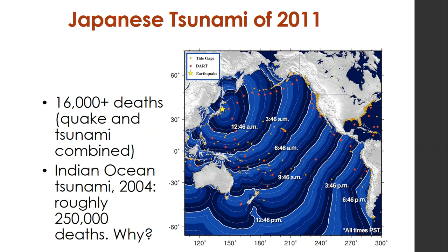The Indian Ocean tsunami in 2004 had roughly 250,000 deaths — many people living in low-lying areas with no warning system. When you have low-lying areas that extend far inland, that wave can travel quite far carrying lots of debris. What happens before a tsunami comes in: if you're standing on shore and the tide goes out very quickly and very far, you need to get away from that shore as fast as possible because the wave is coming. During the Indian Ocean tsunami, there's video of tourists in Thailand who walked out to see what was happening when the tide went out, and then the wave got them.